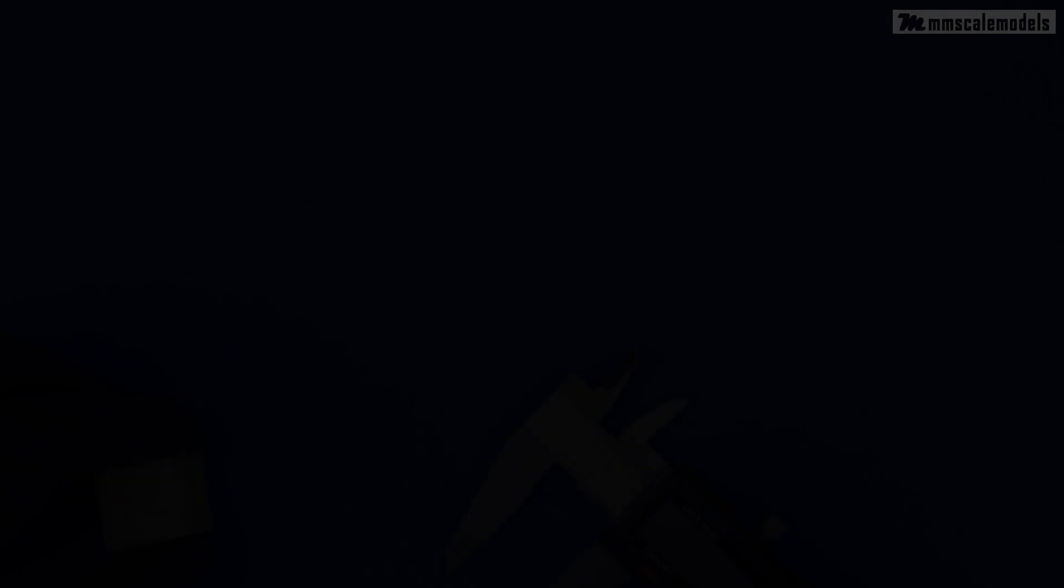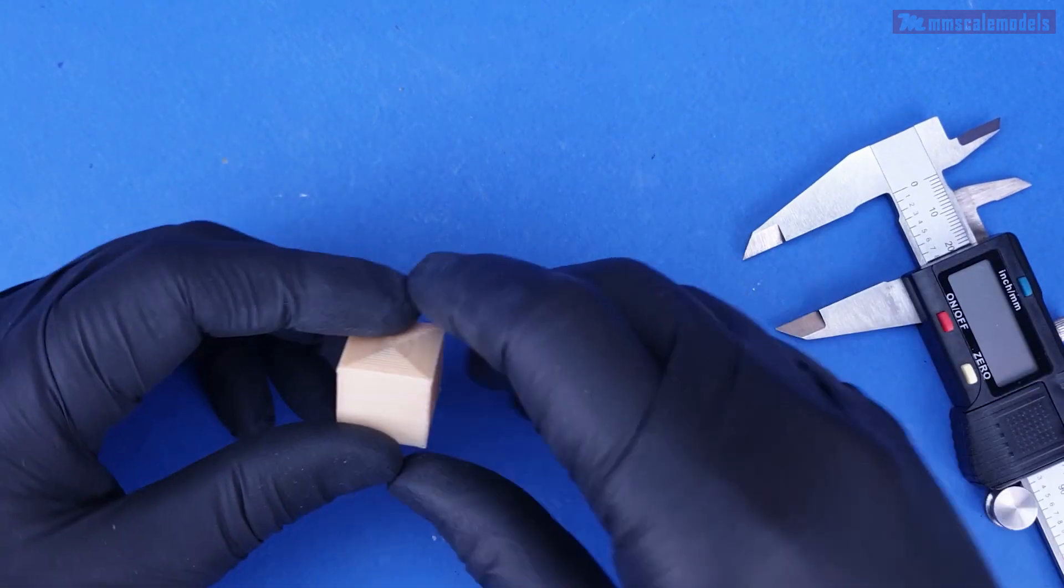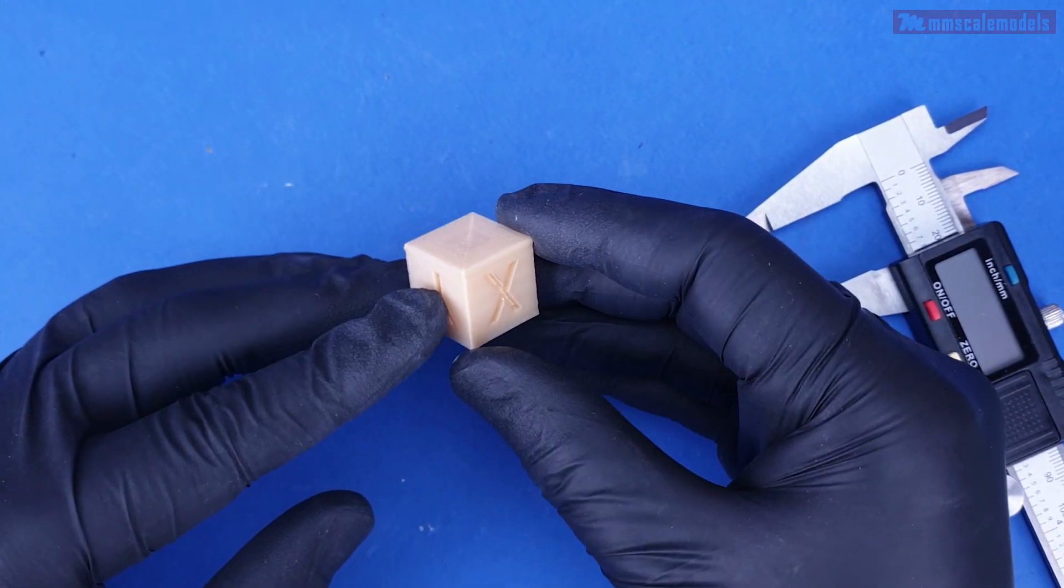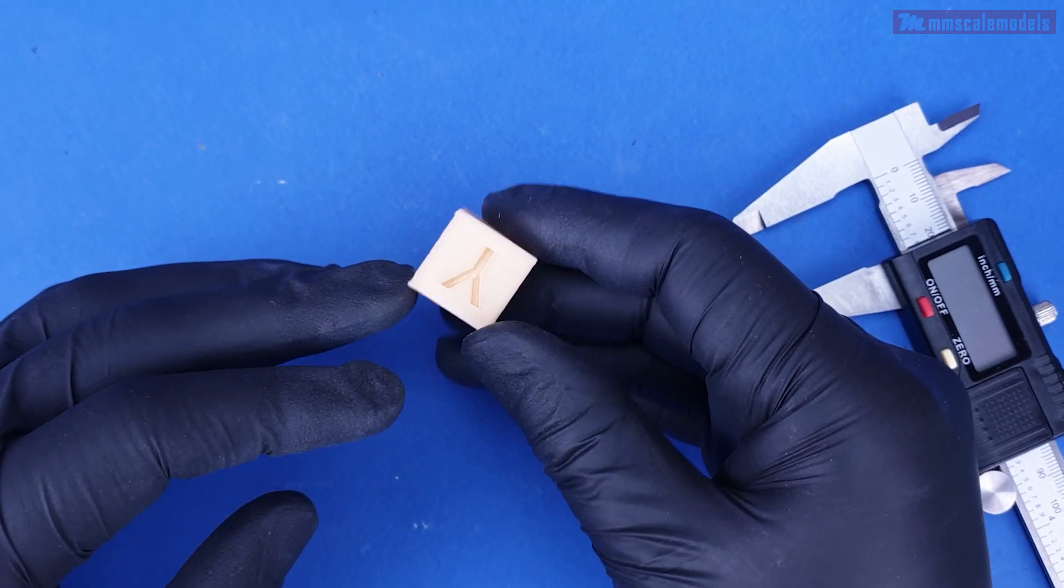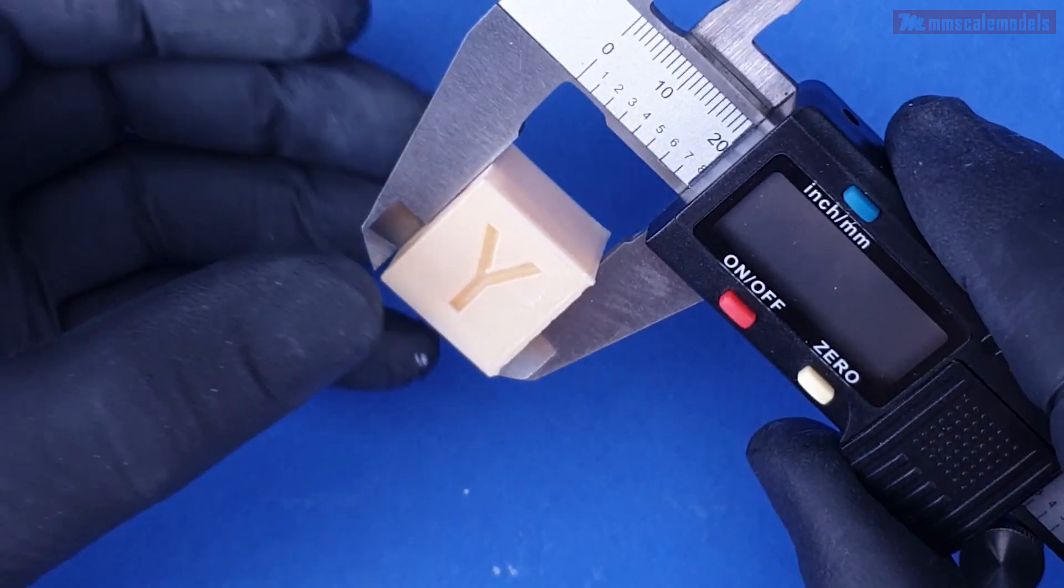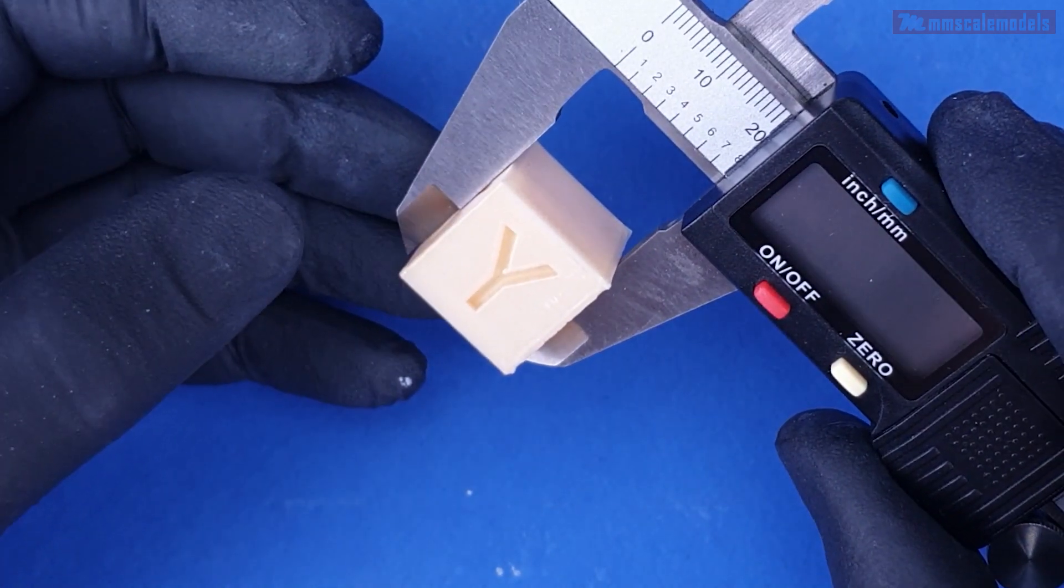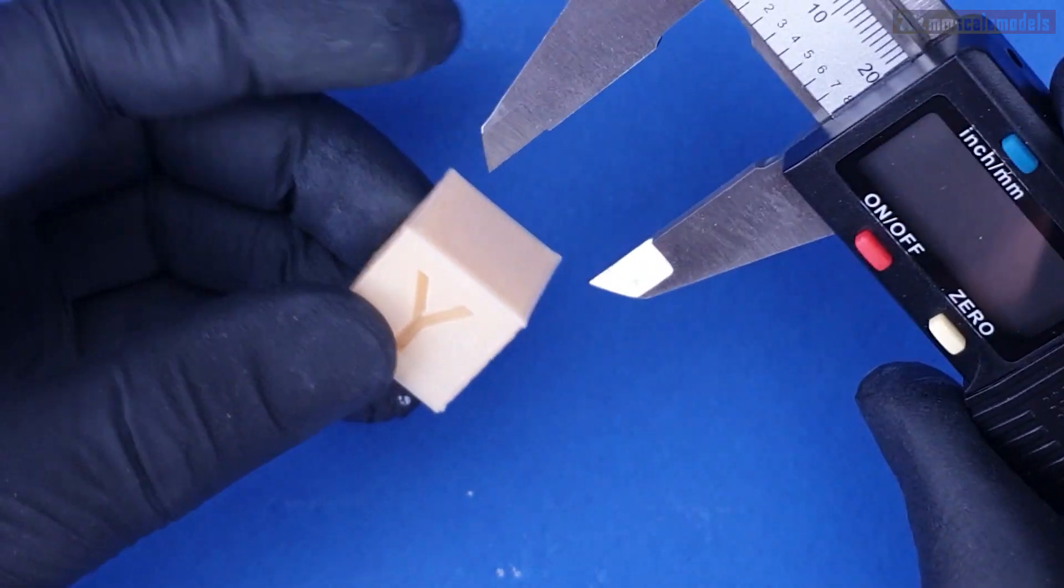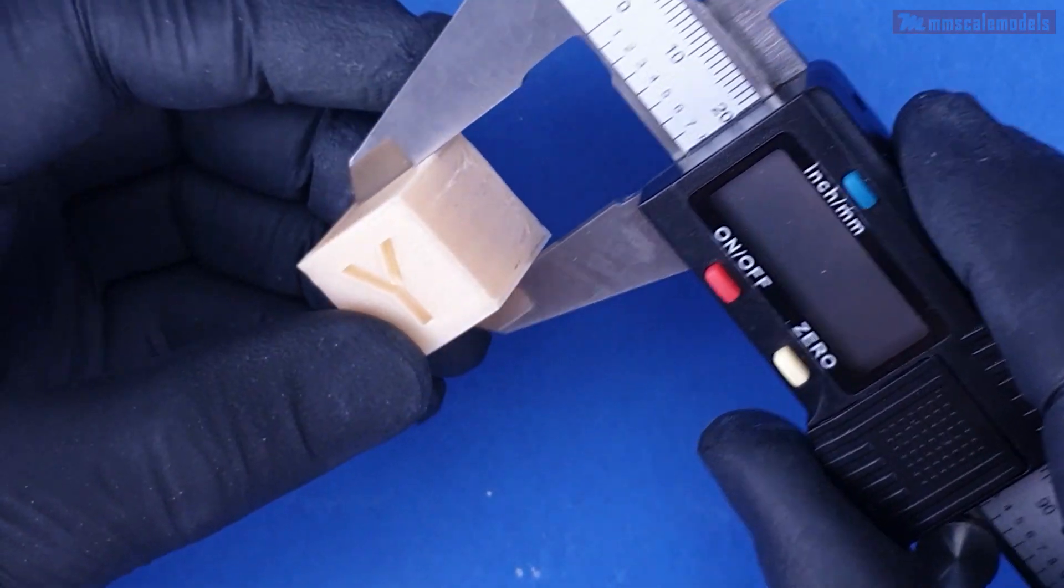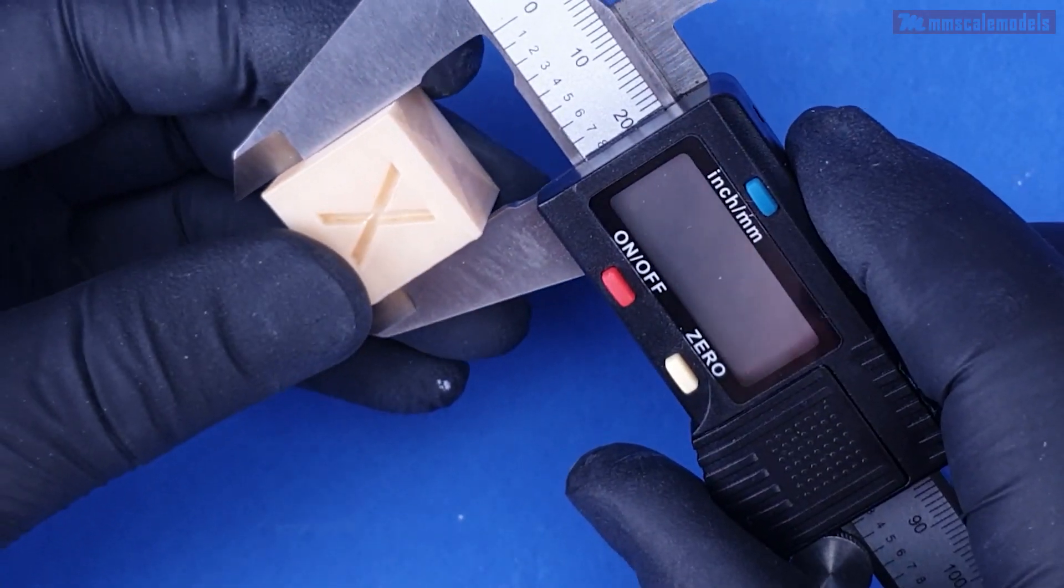After completing the bed leveling procedure I went ahead for the first print. This is a calibration cube and it is made with the purpose of testing the accuracy of your printer. This cube has 20 millimeter sides and it should print this way. Fortunately enough the dimensional accuracy of my printer is spot on.